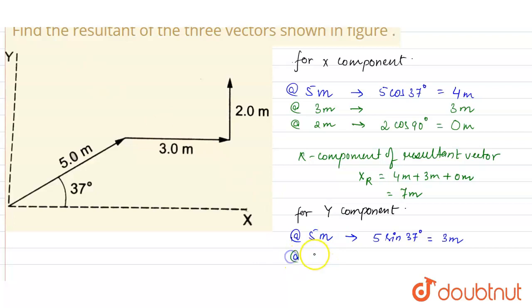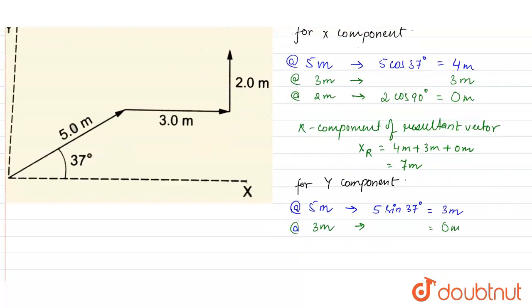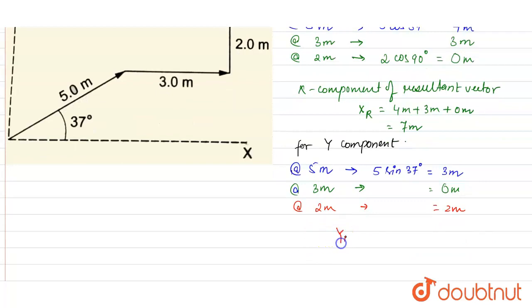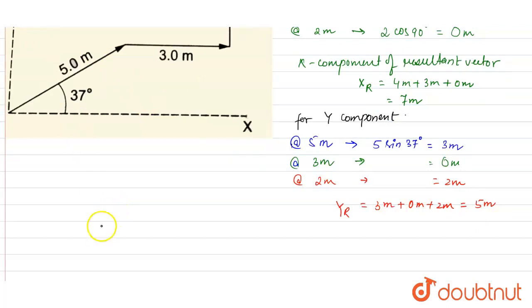For the 3-meter vector, which is a horizontal vector, the y-component will be zero. For the third vector of 2 meters, the y-component is 2 meters, as it is making an angle of 0° with the vertical. The resultant y-component is therefore 3 + 0 + 2 = 5 meters.